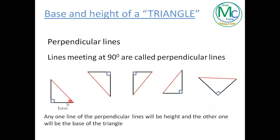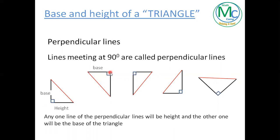For example, if I take this side as base, then the perpendicular line of this line — which is this — will be the height. Or if you want to change this side to be the base, then this perpendicular side for this line will be the height. Similarly, if I'm taking this side as base, the perpendicular line to this line — which is this — will be the height.